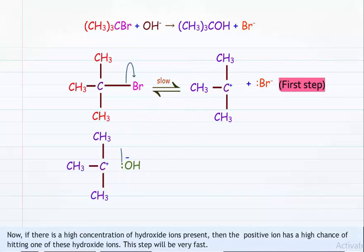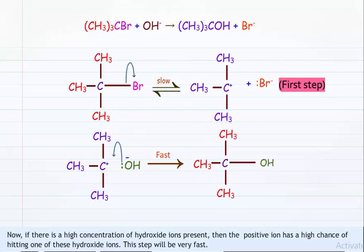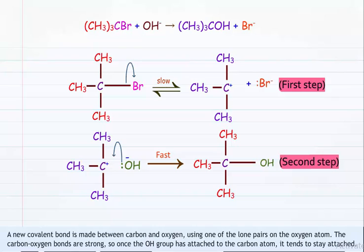If there is a high concentration of hydroxide ions present, the positive ion which was formed has a higher chance of hitting one of these hydroxide ions, and this step will be very fast. A new covalent bond is made between carbon and oxygen using one of the lone pairs on the oxygen atom. The carbon-oxygen bonds are strong, so once the OH group has attached to the carbon atom, it tends to stay attached.